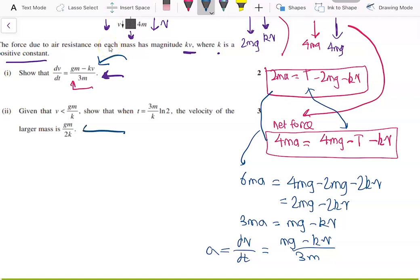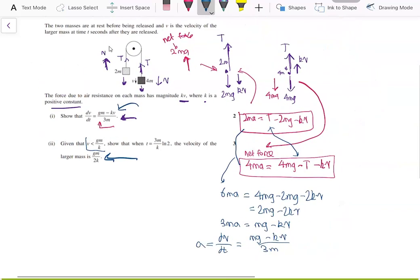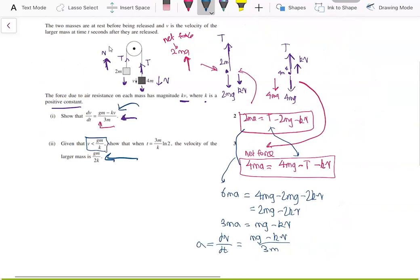And the second part is we are given v equals gm over k. Show that when t equals (3m over k) ln 2, the velocity of the larger mass is equal to gm over 2k.